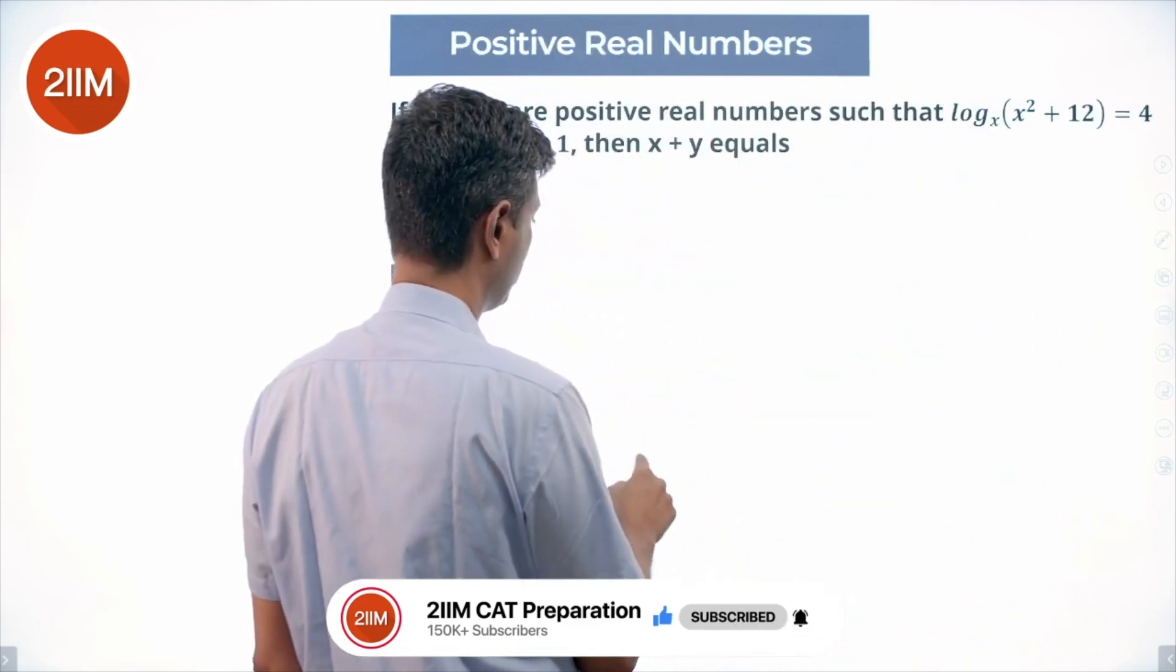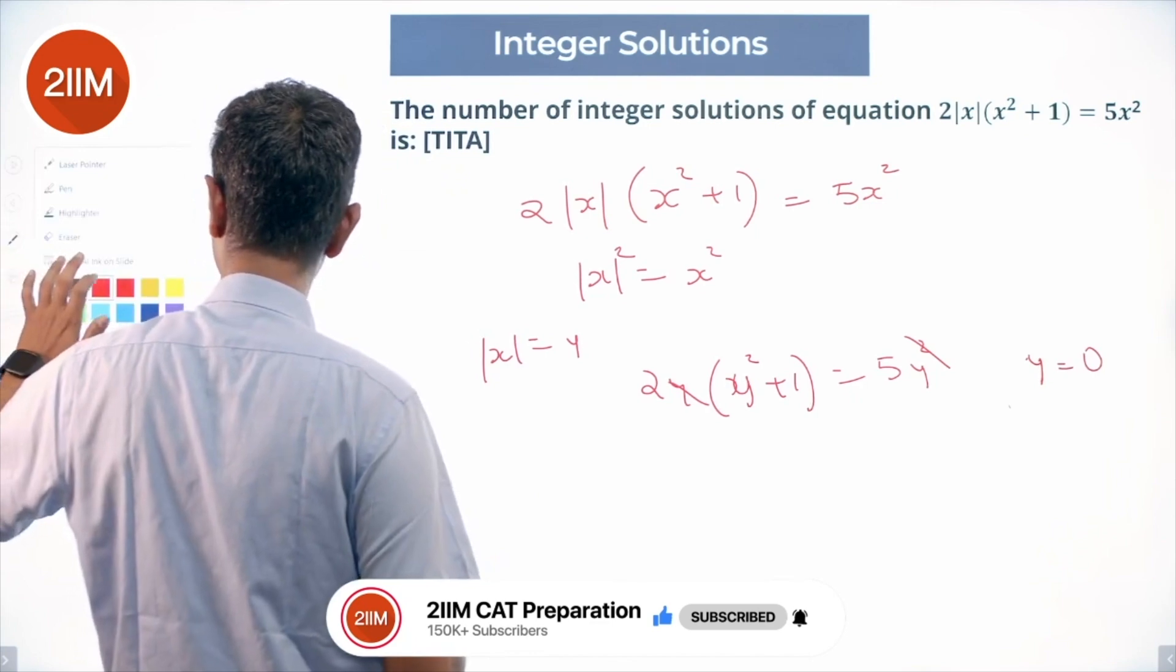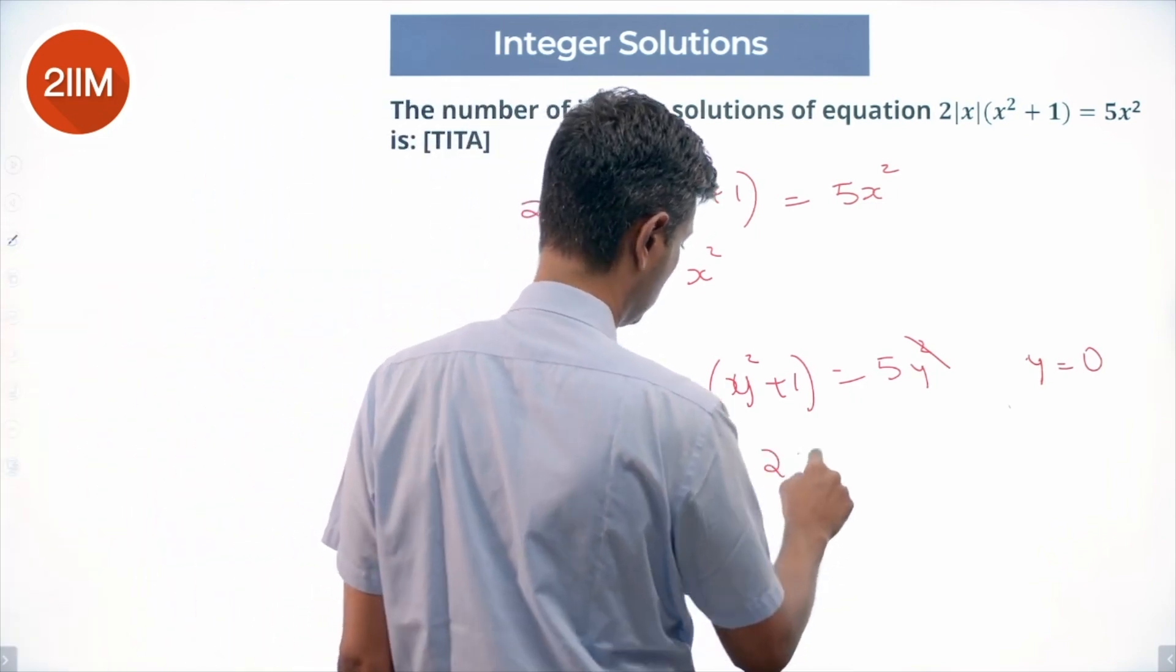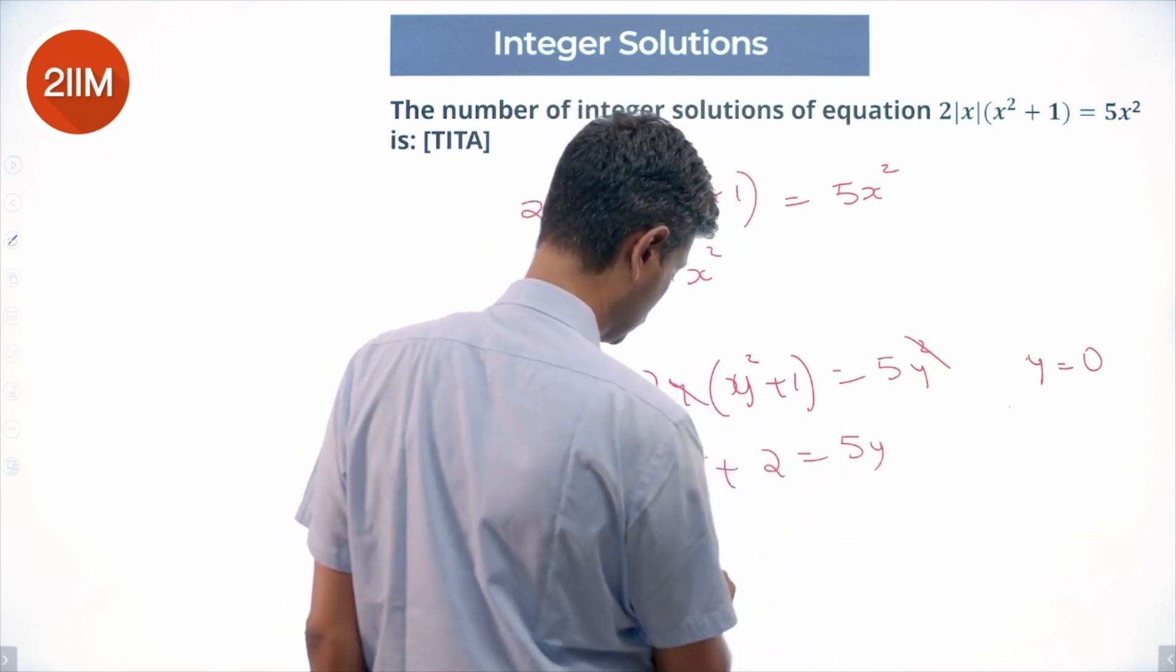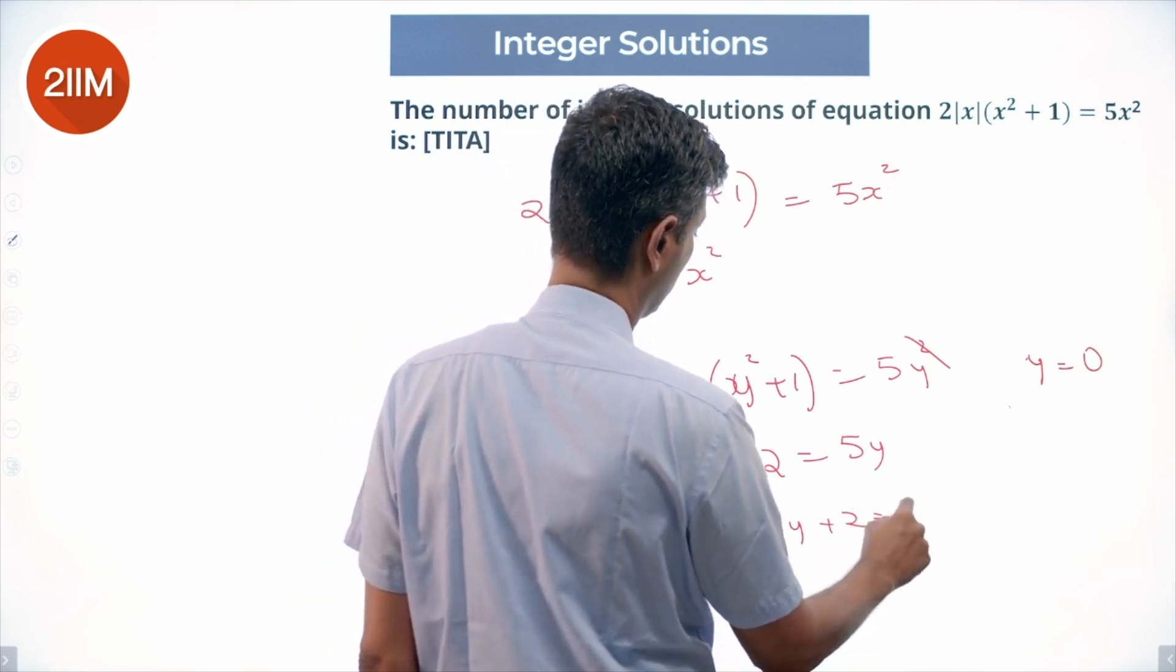And then we have 2y² + 2 equals 5y. 2y² minus 5y plus 2 equals 0.